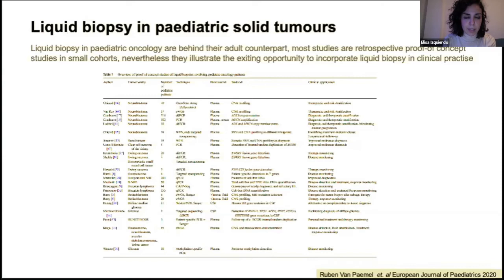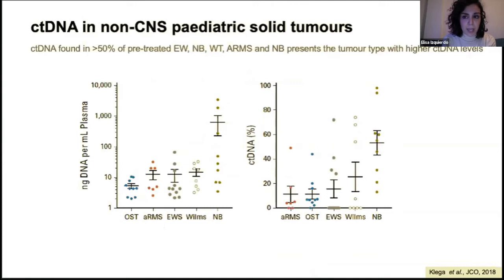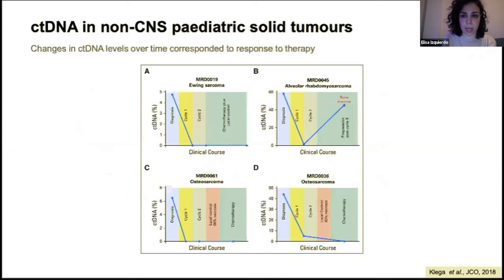While few studies have compared plasma ctDNA levels among pediatric tumors, one study conducted ultra-low pass genome sequencing on 45 pediatric diagnostic patients' pre-treatment plasma samples and identified ctDNA in more than half of the samples. It appears that neuroblastoma patients have higher levels of ctDNA compared to sarcoma, rhabdomyosarcoma, Ewing's, and Wilms tumor. In patients collected at multiple time points, plasma showed that changes in ctDNA levels corresponded to treatment response.